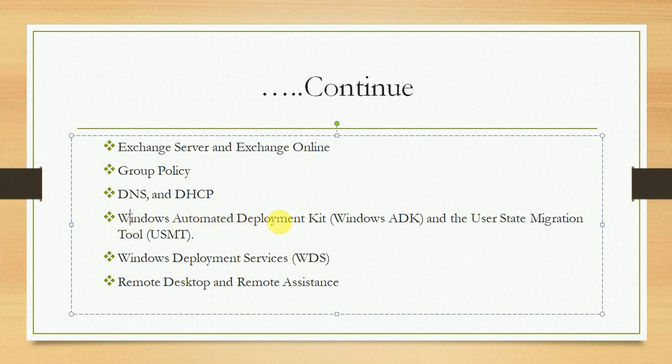Windows Automated Deployment Kit — Windows ADK — and the User State Migration Tool (USMT) are also used for OSD purposes. We get WinPE from ADK, and USMT helps migrate user state during SSCM migrations such as upgrading from one SSCM version to another. Both technologies are vast, so just basic knowledge of how they work is sufficient. You also need to understand Remote Desktop and Remote Assistant, as SSCM has features for remote desktop and remote assistance to check things on remote machines.